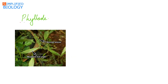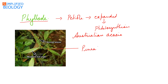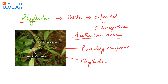Next is phyllode. In phyllode, it is the petiole that gets expanded, forming a lamina-like structure that carries out photosynthesis. This is seen in some species of Australian Acacia. They have normal pinnately compound leaves, but the petiole of some leaves and the rachis get expanded forming a lamina-like structure called phyllode, which carries out photosynthesis.